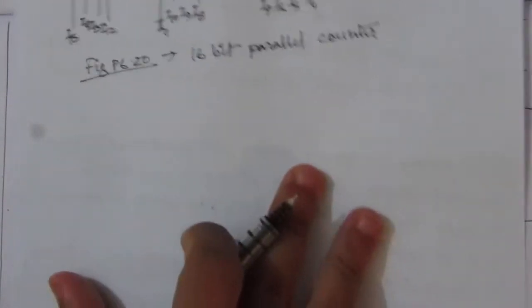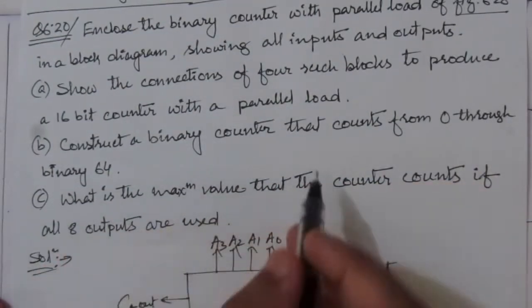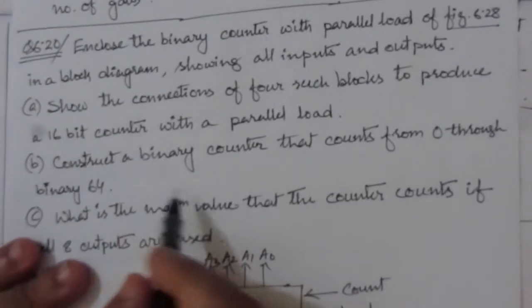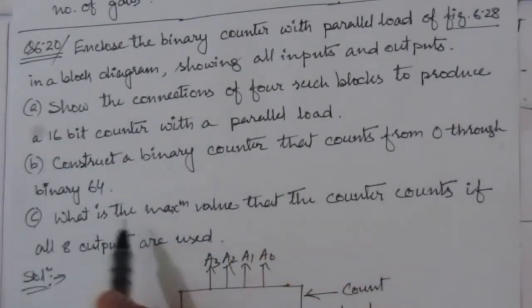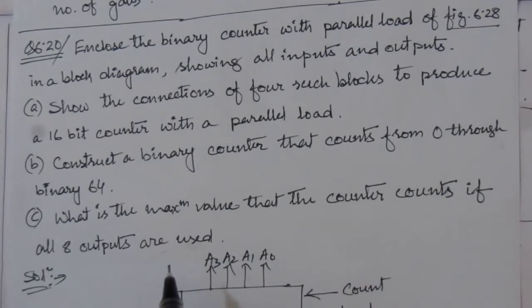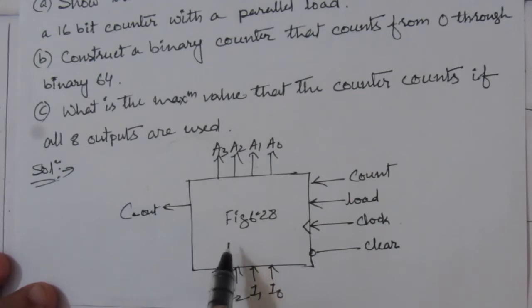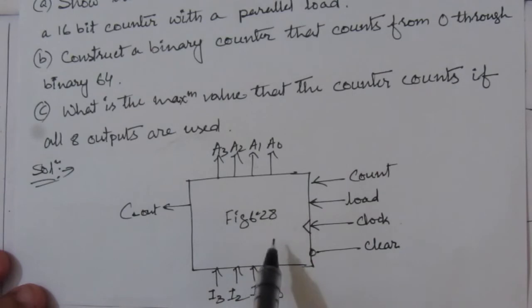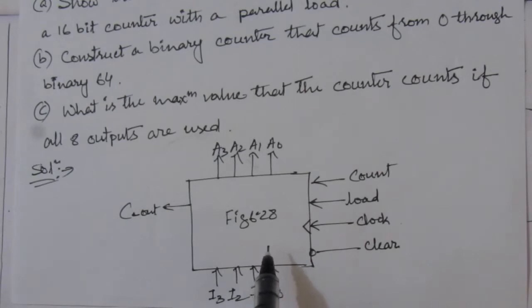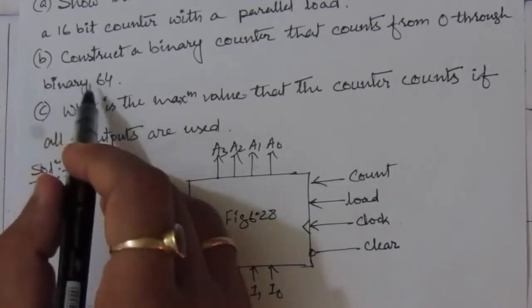Now let us go to the second part of the problem. We have to construct a binary counter that counts from 0 through 64. We have to construct a counter with a highest count of 64. Since 64 equals 2 to the power 6, and one 4-bit counter can count up to 2 to the power 4, we need two blocks. With two blocks we can count up to 2 to the power 8, which is 256, but we only need to count up to 64.